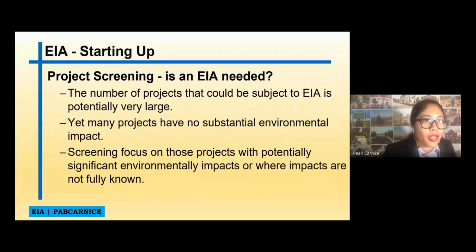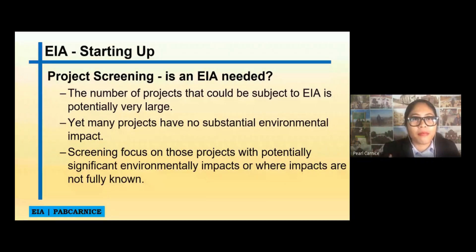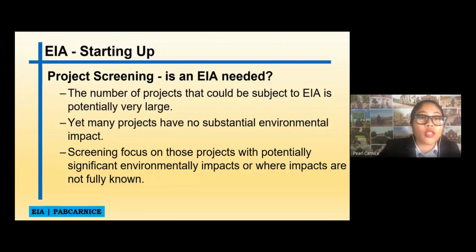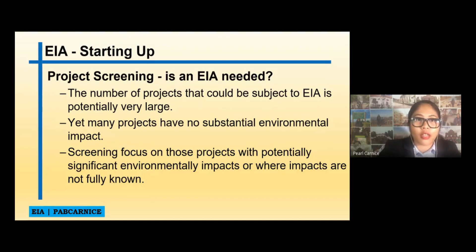Project screening is actually very important because there are a number of projects that could be subject to EIA, and the number is potentially very large. Yet, if we look back at environmental critical projects and environmental critical areas, even though the environmental critical project has four categories — actually the fifth one is golf courses — there are actually a lot of projects under that category. Many projects have no substantial environmental impacts, which is why we have Category C and Category D. Screening focuses on those projects with potentially significant environmental impacts or where impacts are not fully known.